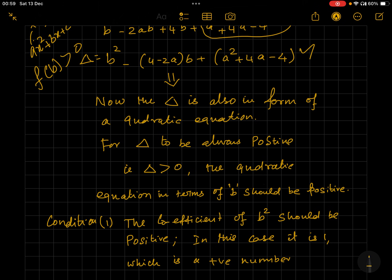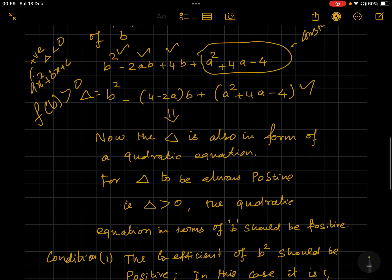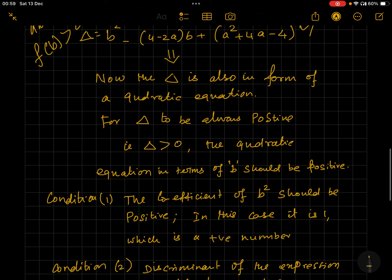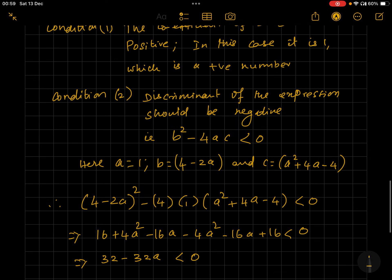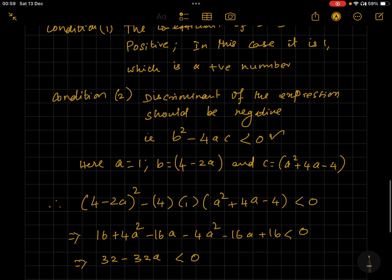it is b², which is 1, so it's positive. Therefore we have to find out the discriminant - we have to check the discriminant b² - 4ac should be less than zero, negative. So let's put: (4 - 2a)² - 4(1)(a² + 4a - 4) < 0. Solving this